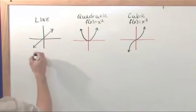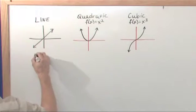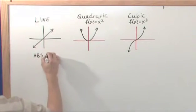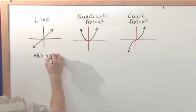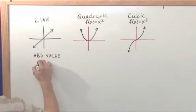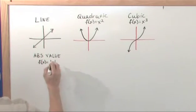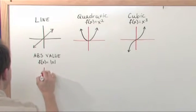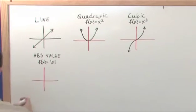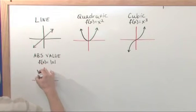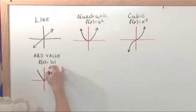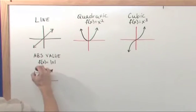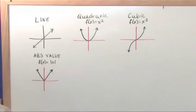Another one is the absolute value, which would be something like f(x) = |x|. That one had a pretty unique shape to its graph. It kind of looked like an upside-down triangle, and it goes on and on forever like this.